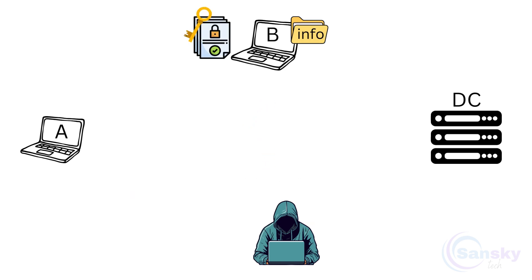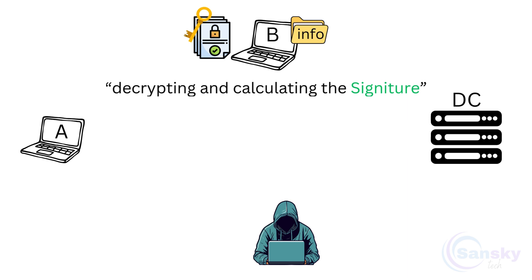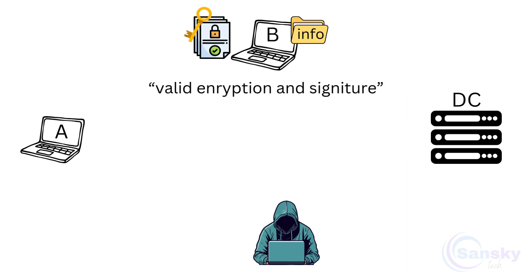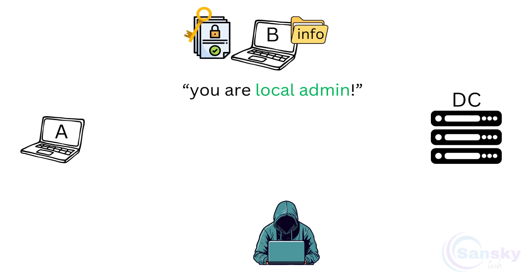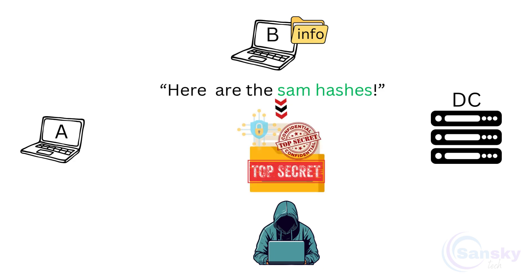System B decrypts the packet and calculates its signature using the session key. The packet is correctly signed and encrypted, so B verifies the NTLMV2 hash in its SAM — the Security Account Manager file. Since A is also the local admin on system B, B complies and sends the SAM hashes to the attacker, unknowingly giving away sensitive password data.